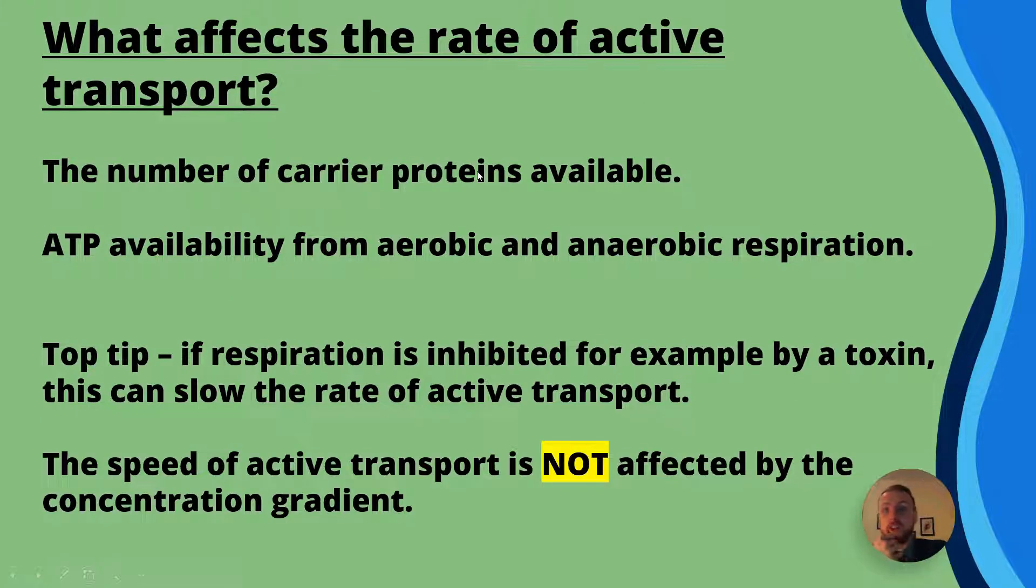Now what affects the rate of active transport? Well first of all the number of carrier proteins available and this is similar to facilitated diffusion. So the more carrier proteins that are available the faster the rate that active transport can occur. Now another thing that can affect the rate of active transport is ATP availability. So if there's plenty of ATP those ATP molecules are going to be able to bind to the specific carrier protein, they're going to get hydrolyzed leaving phosphate behind. That's going to give the energy to cause the carrier protein to change shape and transport across the molecule or ion.